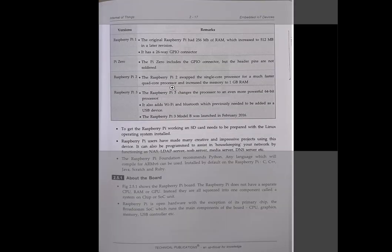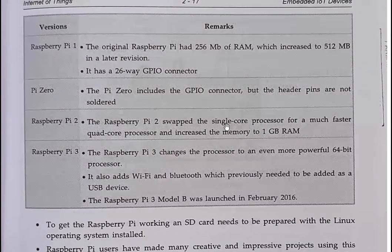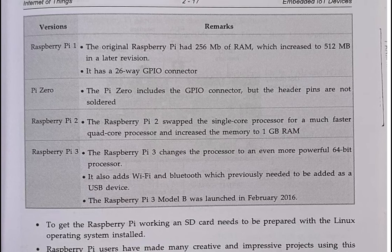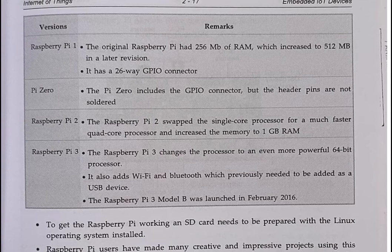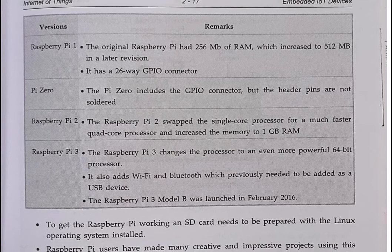There are three main versions of the Raspberry Pi. The first is Raspberry Pi 1, the original, which had 256 MB of RAM, later increased to 512 MB of RAM. It has a 26-way GPIO connector — similar to Arduino, the Raspberry Pi also has general purpose input/output pins.